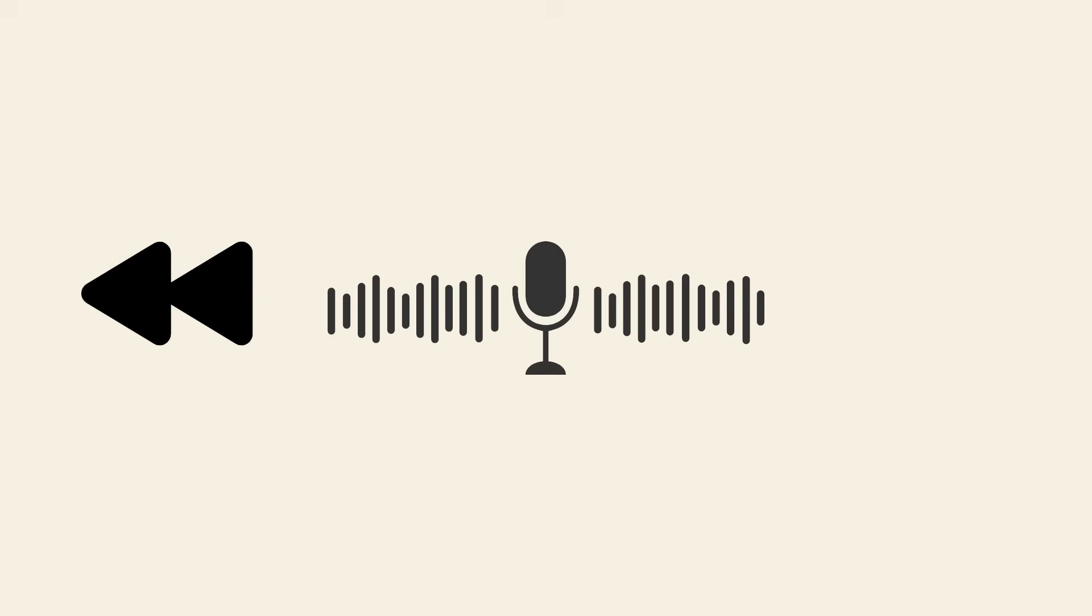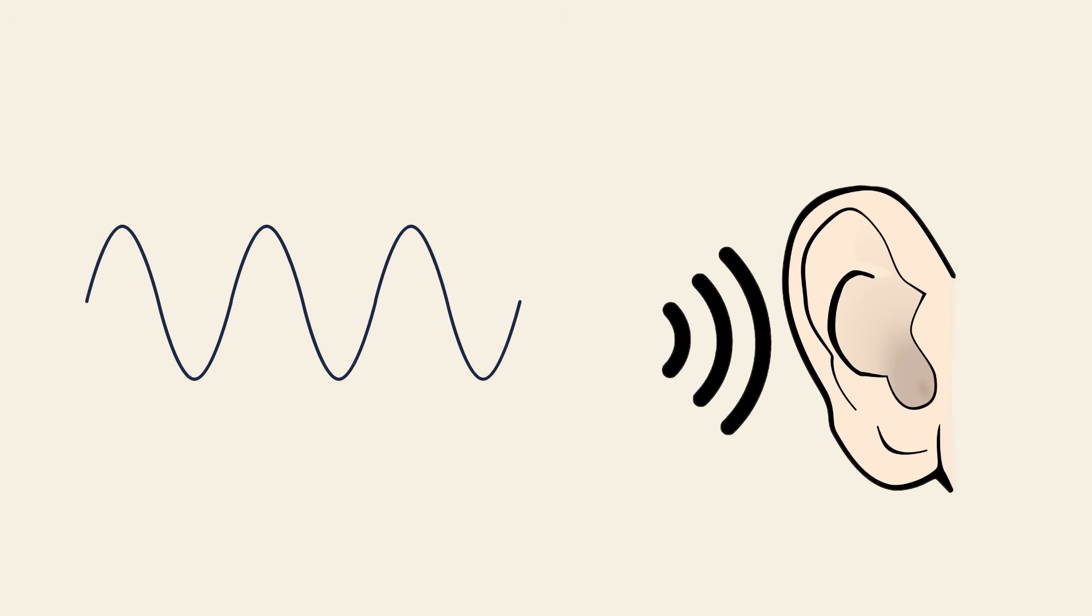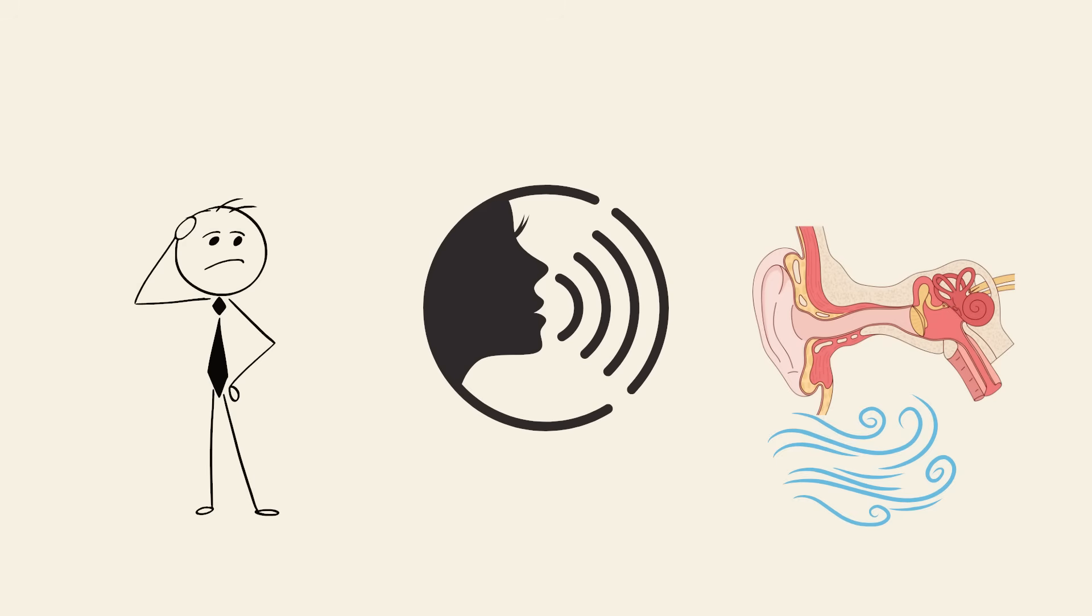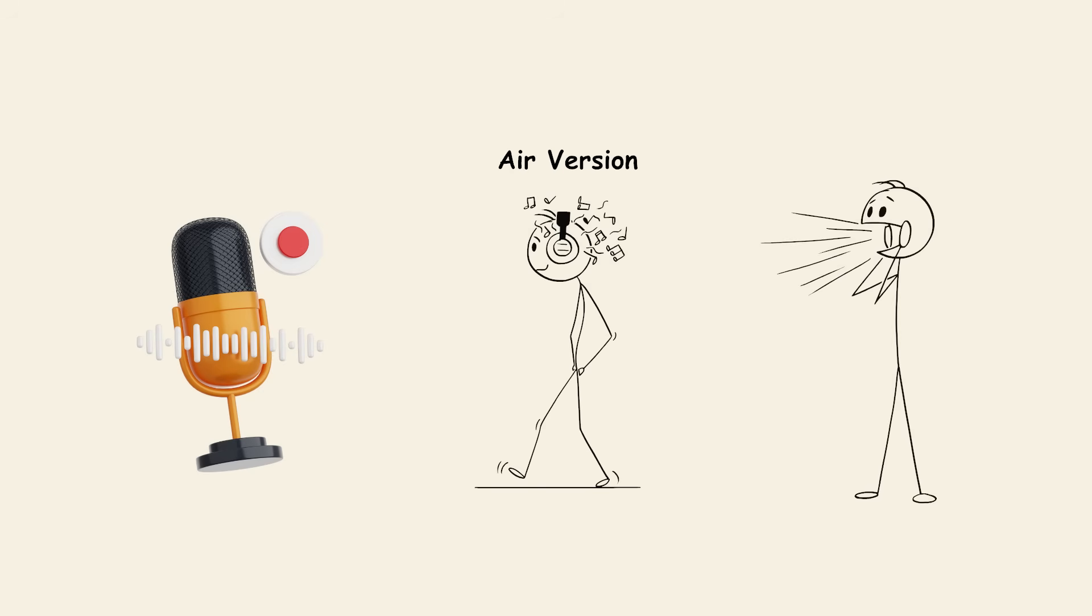But when your voice is recorded and played back, all you're hearing is the sound from the air, not the extra depth from your skull vibrations. That's why it often sounds higher pitched or thinner than what you're used to. Basically, the version of your voice you think is real is a mix of air and bone, but everyone else hears only the air version. That's the one on tape, and yes, that's how you really sound to the world.